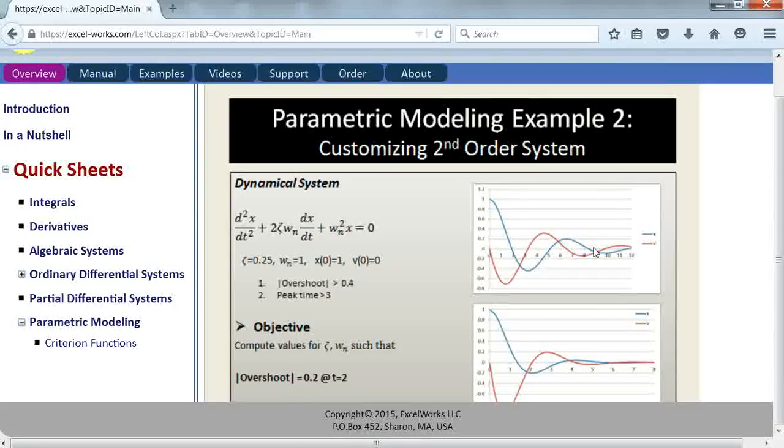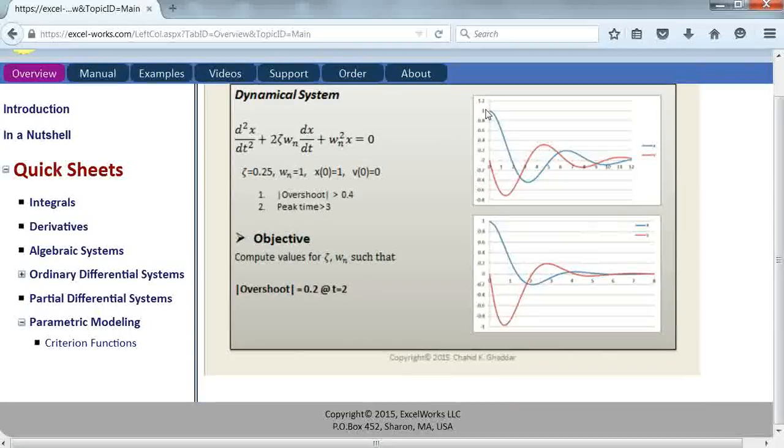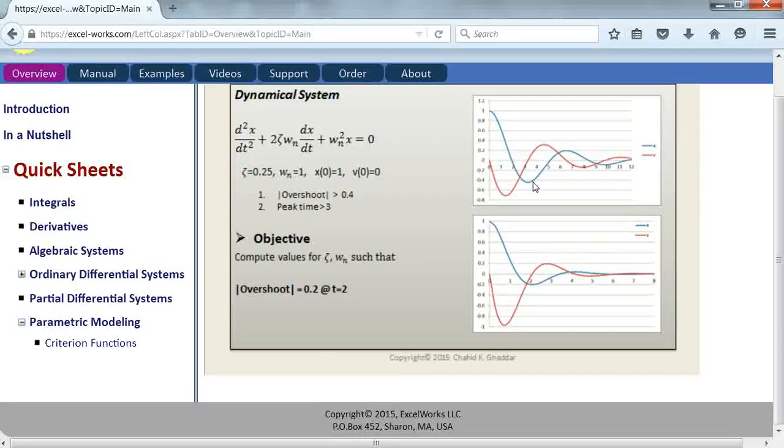Our objective is to customize the response so the system is nearly critically damped, demanding that the displacement peak, referred to as the overshoot, occurs at exactly 0.2 at the peak time, which is t equal to 2. We want to transform the response of the system from this behavior to the following behavior by finding values for zeta and omega n.